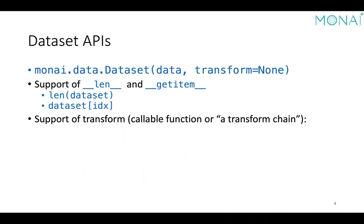Recap of the basics of the MONAI dataset: it has two inputs — data and transform. Data is just a sequence of Python objects, for example lists or tuples of images, and the transform is optional. The dataset supports queries of the size of the data collection and supports indexing. The transform should be a callable function, or by using a MONAI compose transform, it can be a stack of multiple transforms — a so-called transform chain.